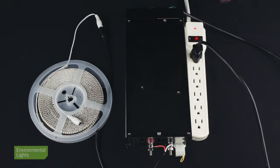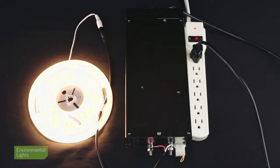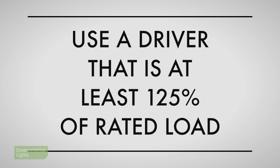One concern I've heard from customers is whether using a too-big supply might hurt the LED strip. For constant voltage strip, don't worry. Here I'm powering that 80-watt strip with a 750-watt monster power supply. If the resistance of the load is so high that it only uses 80 watts, no problem — it delivers 80 watts. The other almost 90% of its capacity is unused. It won't hurt your lights. So how do you avoid overloading the driver? Use a driver that's at least 125% of the rated load. Simple.